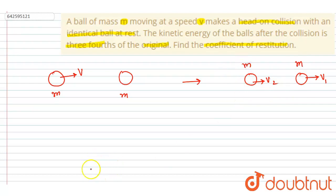So we want the coefficient of restitution. Let's see what is the coefficient of restitution. Coefficient of restitution is velocity of separation after the collision, that is v1 minus v2, and velocity of approach before the collision.